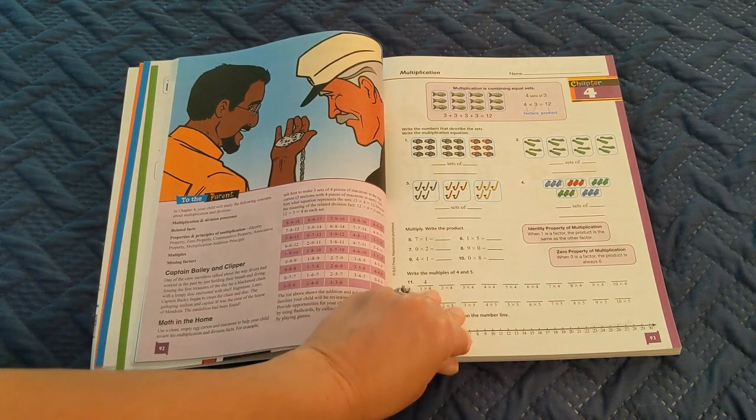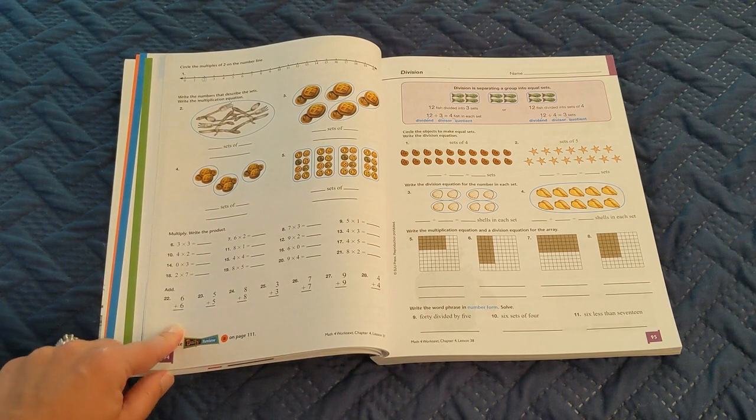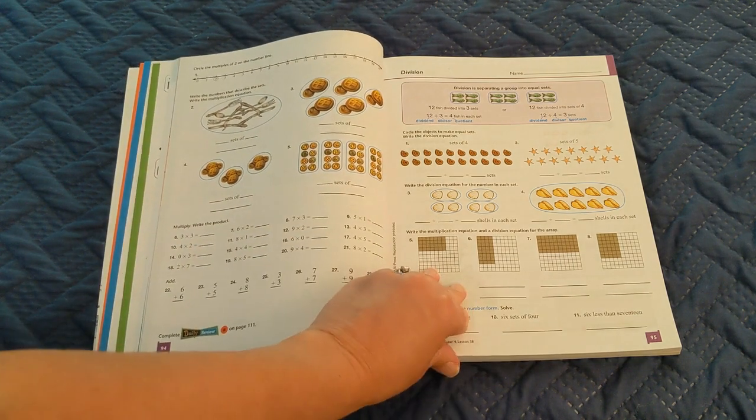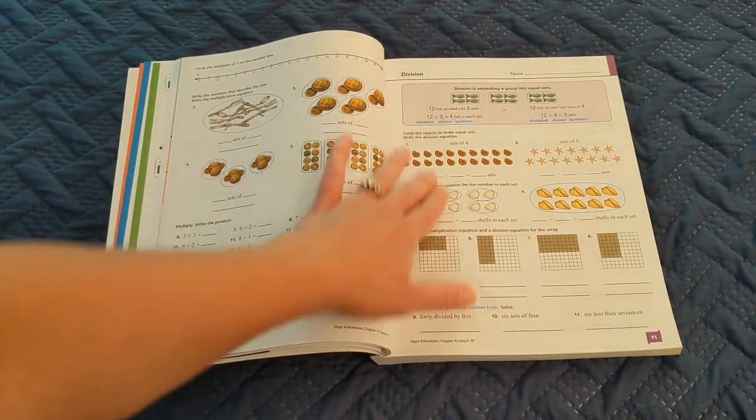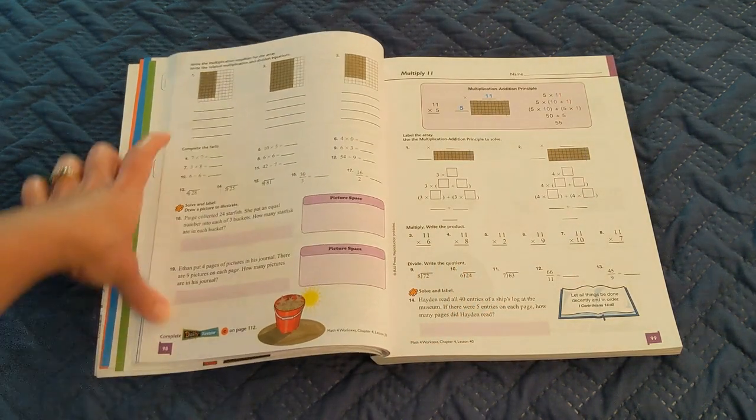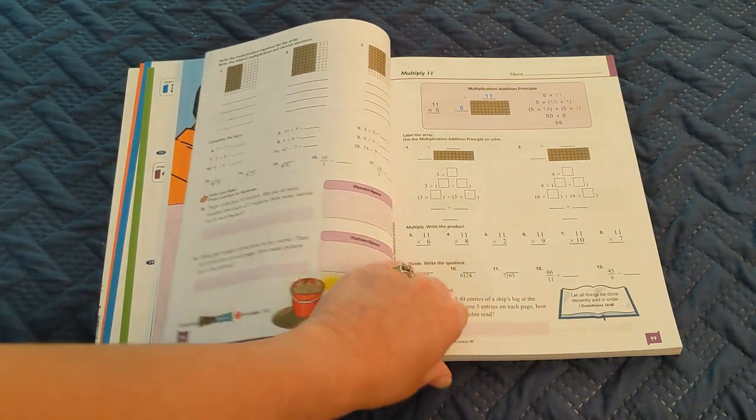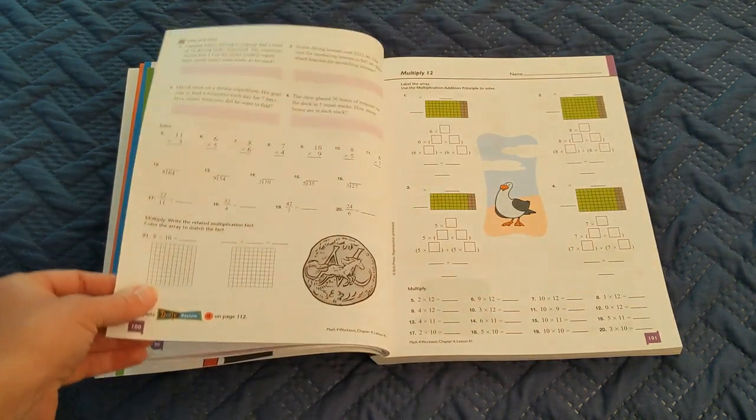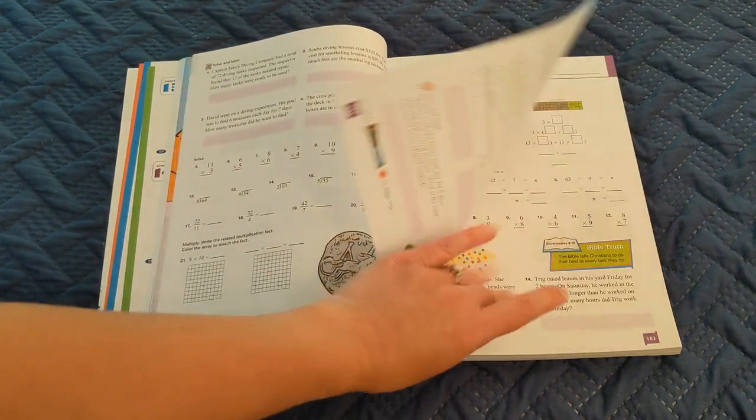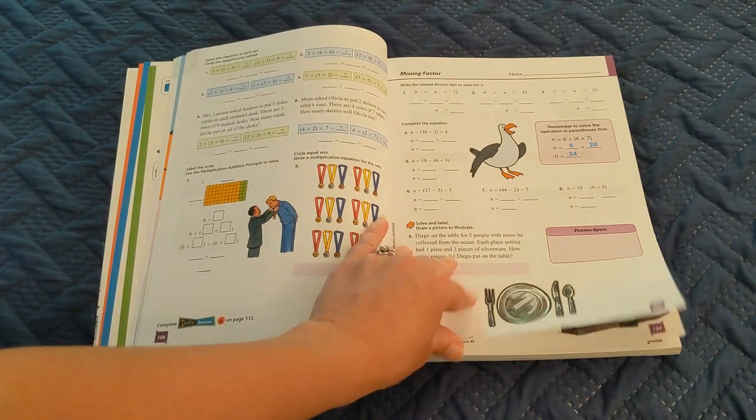It starts off each chapter with the new content, and then it does often have review at the bottom of the page. Each lesson is pretty much set up the same way, where the new content is on the front, and then the same style of exercise repeats on the back, with some review usually at the bottom of the back page. This is all for Chapter 4.